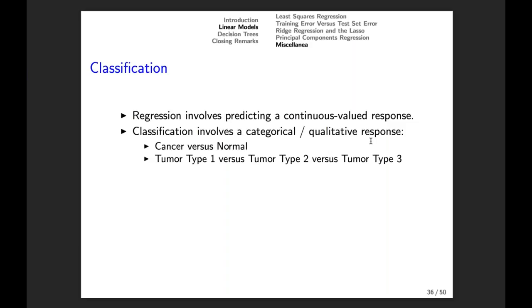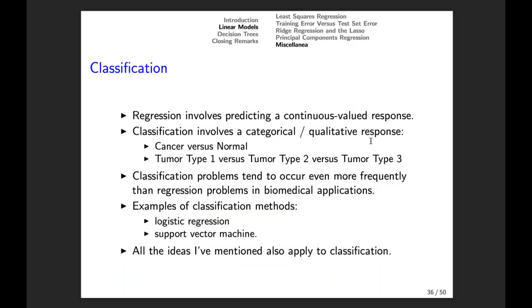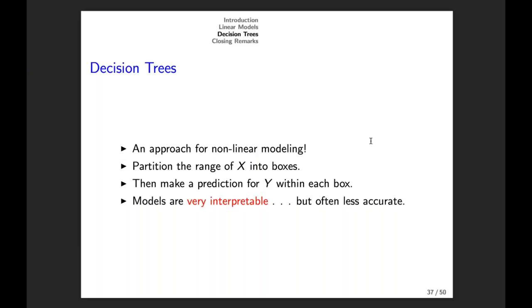Briefly, I've been talking about regression. Classification is when you have a categorical or qualitative response. The reason I haven't talked about classification much is because everything I've talked about for regression applies exactly the same way to classification. Once you get it with regression, you're going to understand classification too — all of the same ideas apply.